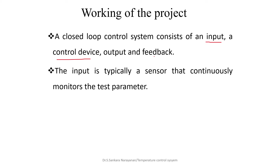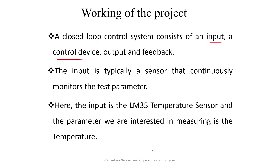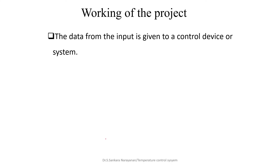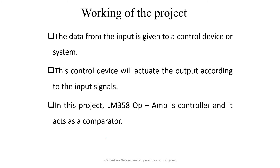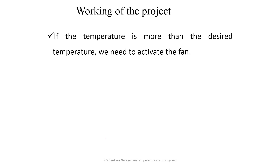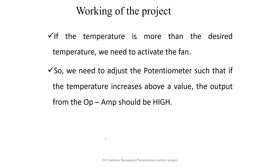The input here is the LM35 temperature sensor, and the parameter being measured is temperature. Data from the input is given to the control device — the controller — which actuates the output according to the input signals. In this project, the controller being used is the LM358 operational amplifier, working in comparator mode. It compares the desired temperature and actual temperature; if the temperature is more than the desired temperature, we need to activate the fan by adjusting the potentiometer.